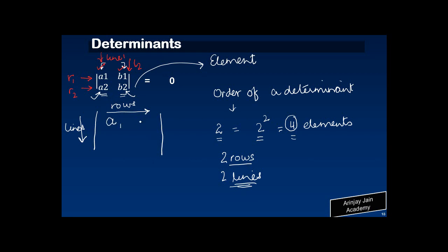The way you write it is: A1, B1, A2, B2. This is a determinant of order two. And if you have to calculate the value of this determinant, how would you do it?